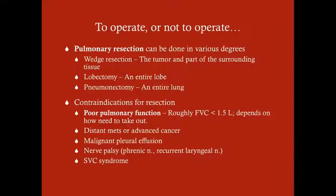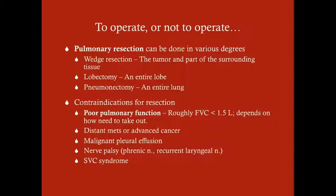Regarding surgical treatment, the key question is whether surgery is appropriate. For central lung cancers (small cell and squamous cell), we don't do surgery — we use chemotherapy and possibly radiation. For peripheral lung cancers, surgery is the treatment. Pulmonary resection can be a wedge resection (tumor plus surrounding tissue), a lobectomy, or a pneumonectomy (entire lung removal). You don't need to know which specific resection to perform, just that pulmonary resection is done for certain lung cancers.